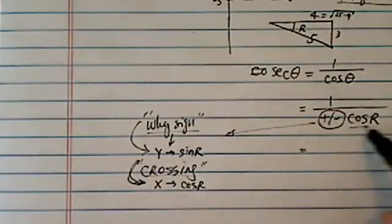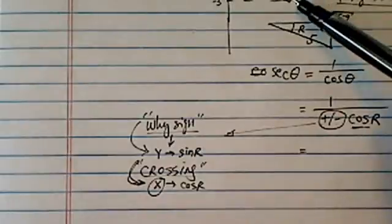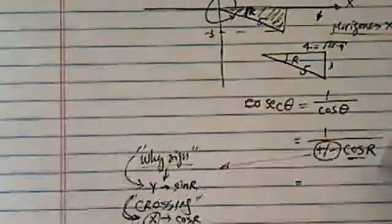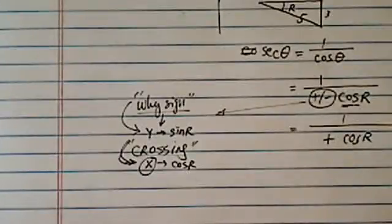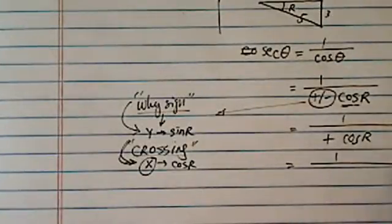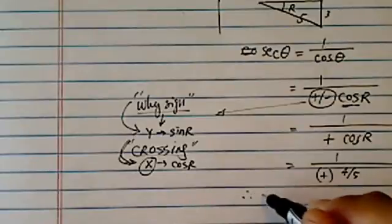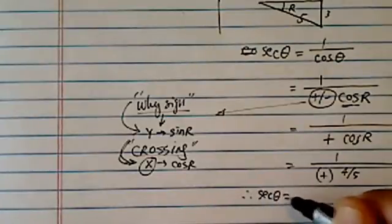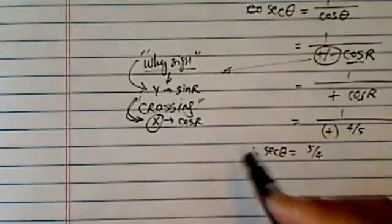So since we're looking for cosine over here, we know it has to be x value. X value in our quadrant four up here is positive, so the value is going to be positive cosine of r. Now from there, all we have to do is figure out what cosine r is. Cosine r is four over five. So therefore, secant of θ is equal to five over four and positive.